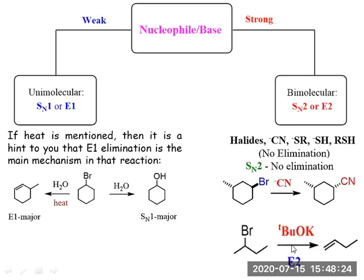The leaving group may be the same (Br), but the outcome is decided by the size of the base or nucleophile. If tertiary butoxide is present, E2 elimination takes place to give the elimination product. There are various factors that decide whether the reaction is elimination or substitution.